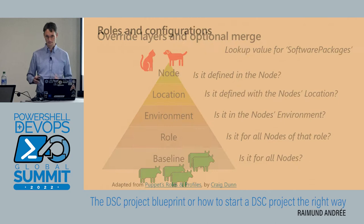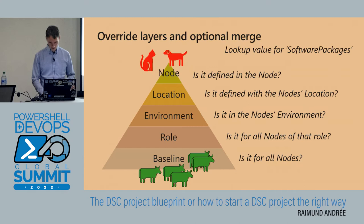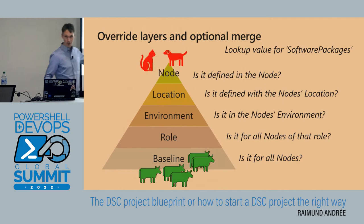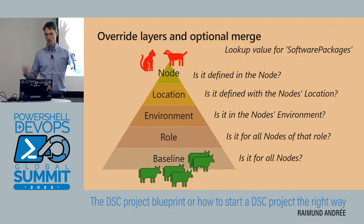When looking up software packages for a node, the lookup works from the baseline level, then the role level, then environment level, merging software packages from all layers to install on the nodes. Now if we have configuration data in a nice shape, the next question is how we connect it with the configurations. Remember: the configuration is what gets converted into a MOF file; the configuration data is just the part injected into the configuration during compilation.